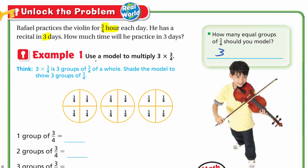Example one: use a model to multiply 3 by three-quarters. Three multiplied by three-quarters means three groups of three-quarters of a whole. Shade the model to show three groups of three-quarters. We have three wholes here. We need three-quarters out of each whole. So this is one quarter, two quarters, three quarters — this is the first three-quarters.